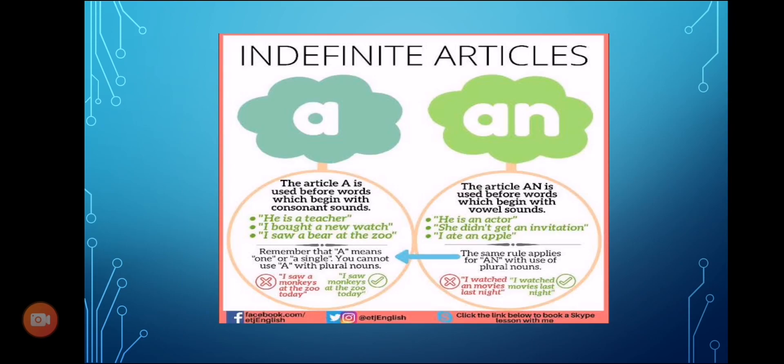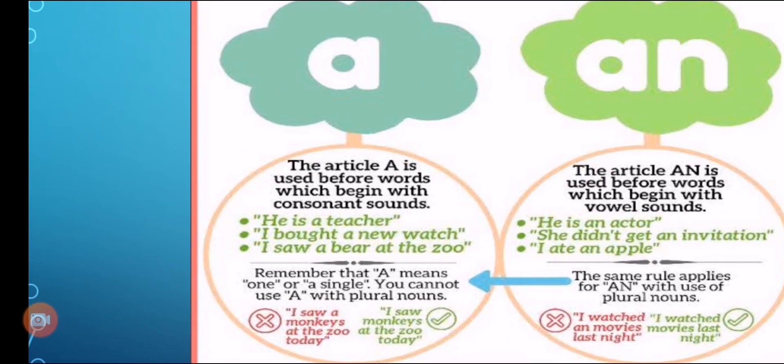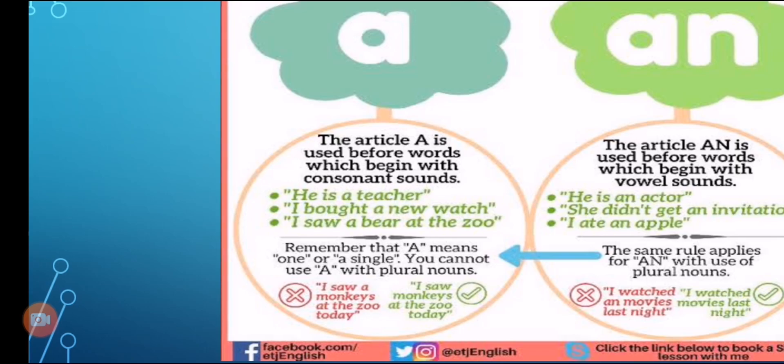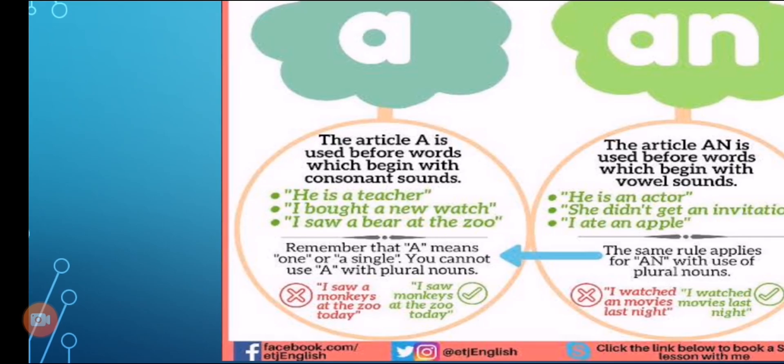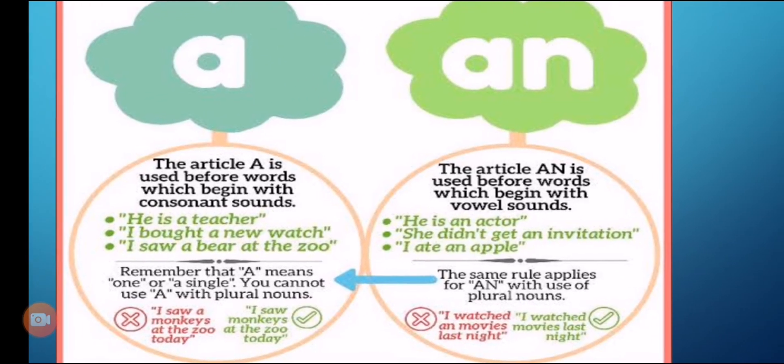Indefinite articles: A and AN. The article A is used before words which begin with consonant sounds. For example: 'He is a teacher,' 'I saw a bear at the zoo.' Remember that A means one or a single. You cannot use A with plural nouns. For example, 'I saw a monkeys at the zoo today' is a wrong sentence. The right sentence is 'I saw monkeys at the zoo today.'